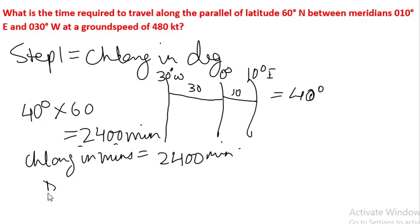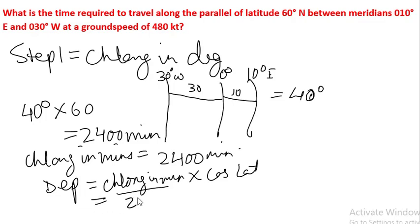Now departure is equal to chalong in minutes into cos of lat. That is 2400 into cos of 60 degrees. Cos 60 is equal to 0.5, so into 0.5 is equal to 1200 nautical miles.